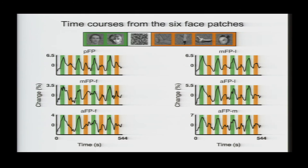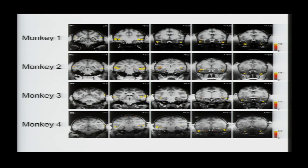And here you can see the fMRI response time course from these six patches. So green is when the monkey was looking at faces, and orange when he was looking at the non-face patterns. And here you can see the consistency of the location of the patches across monkeys. So here are four different monkeys from posterior to anterior, and you can see how consistent the locations of the six patches are.